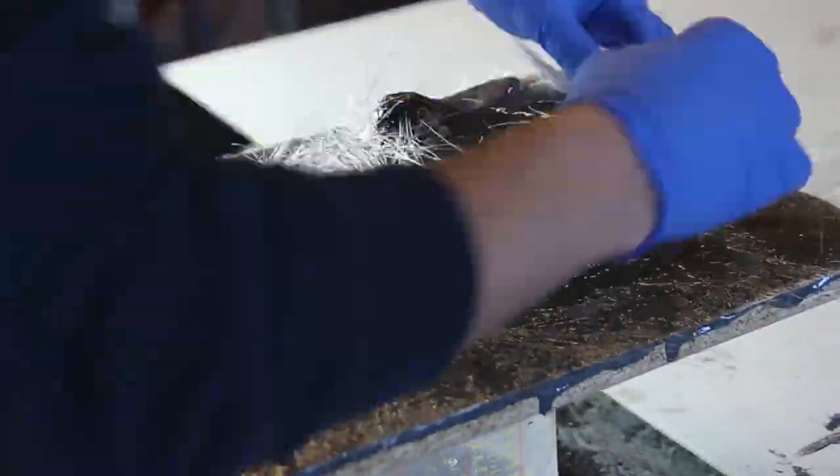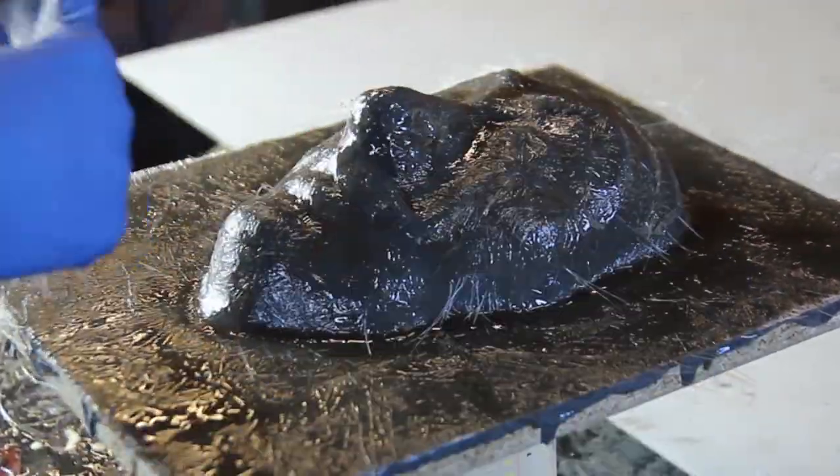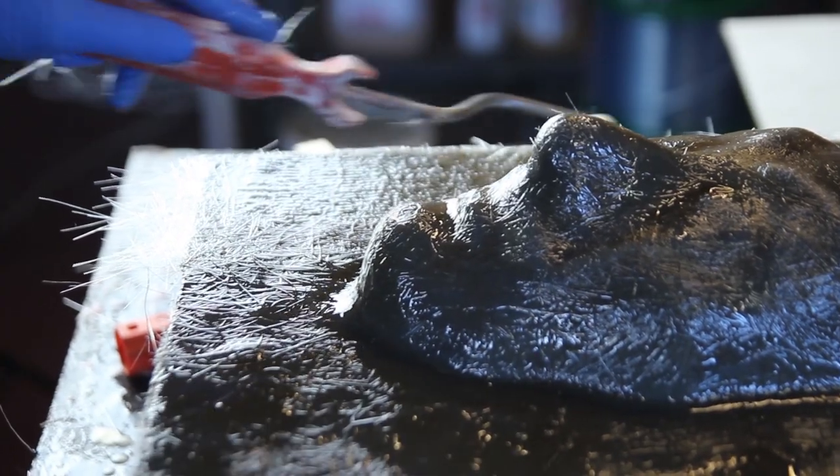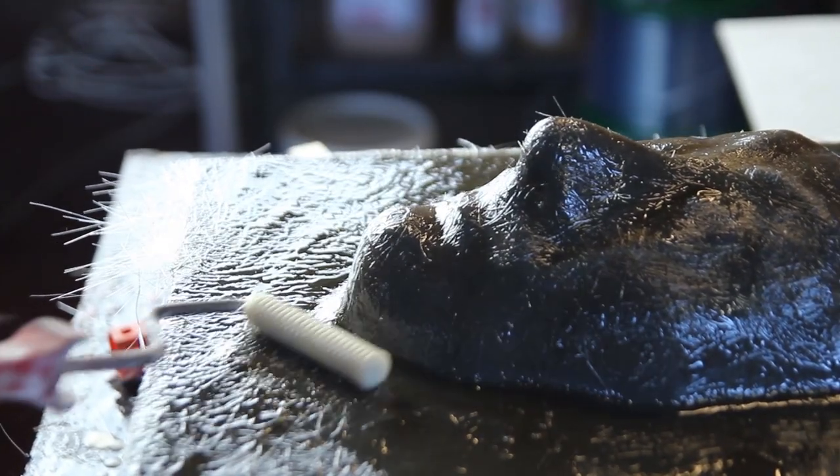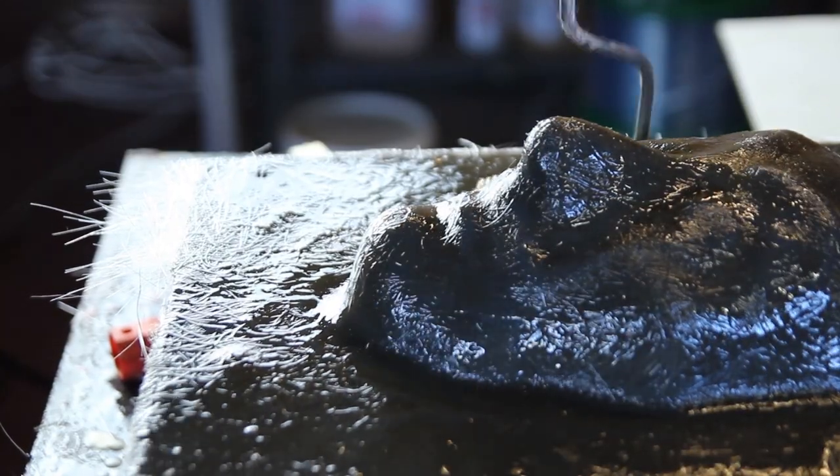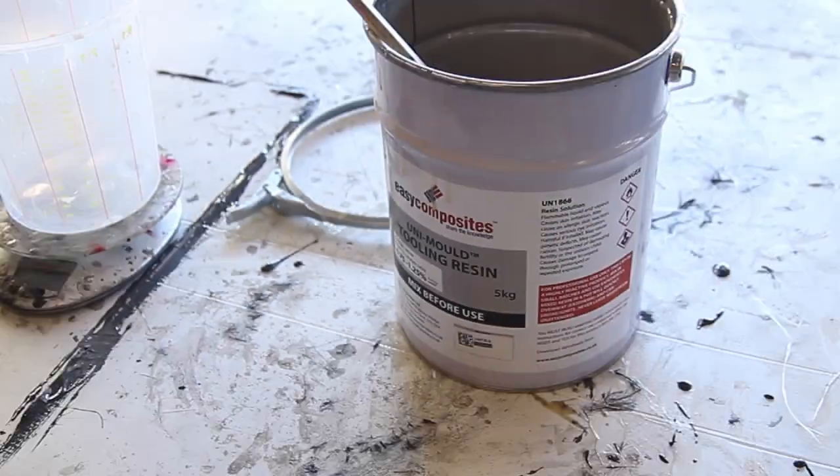So first thing is to apply a layer of the coupling resin on top of the part, and then you just wet out the CSM, so the chopped strand mat. It's fiberglass and it has a binder in it, and when you apply it with resin it will soften up and it will be much easier to apply it in more complex shapes.